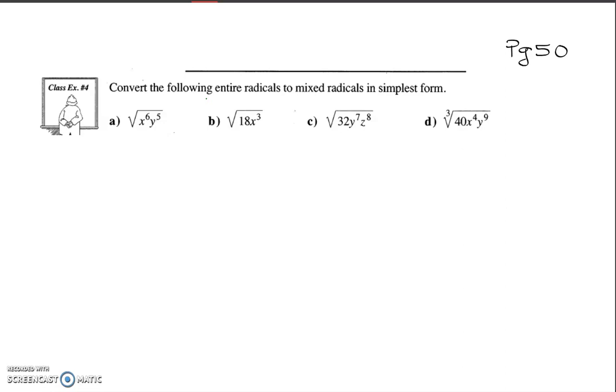So on page 50, example 4, part A. When we look at this one over here, it asks us to convert these variables into mixed form. I don't want to do the extension all the time, but this is for explanation. What this is, is our x multiplied 6 times. That's what this means. And the y is 5 times.